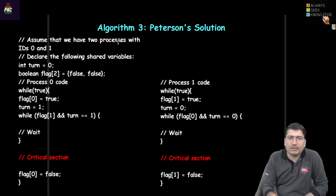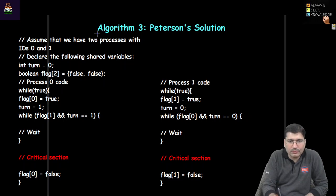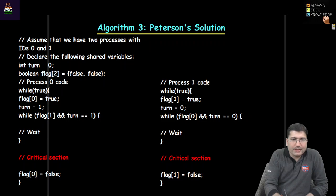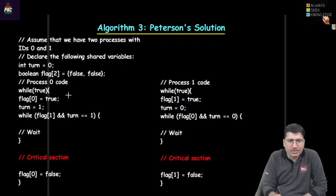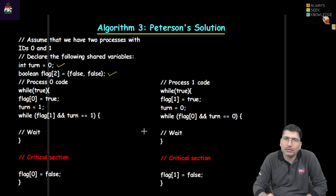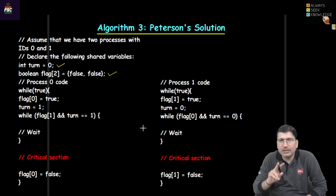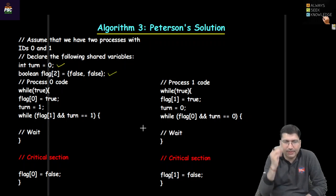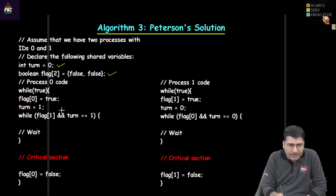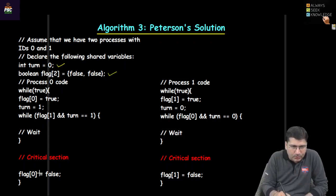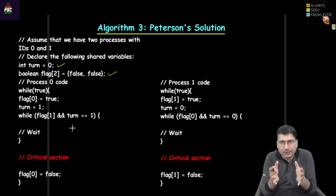Let us discuss the third algorithm, the very famous Peterson's solution or Peterson's algorithm. Peterson combines the two previous solutions — it takes the TURN variable from the shared-variable solution and also uses flag variables. So Peterson's solution is a combination of both, and it is a two-process solution.